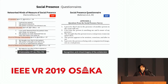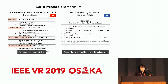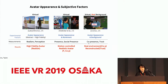Four sub-scales of networked minds' social presence were used, focusing on co-presence, attention, and interaction during communication. The second survey seemed more focused on recognition and virtual imagery of the collaborator. Related previous studies have also investigated the relationship between avatar representation and users' subjective feelings, such as presence or realism.